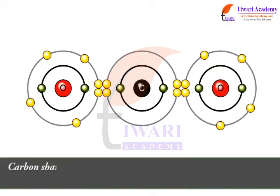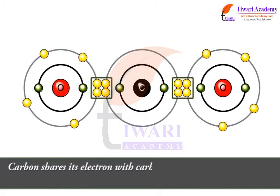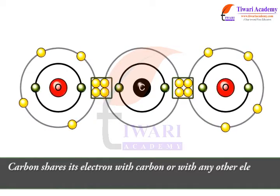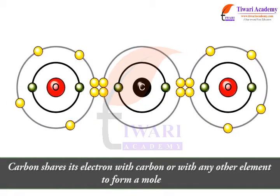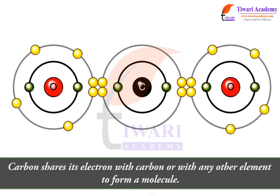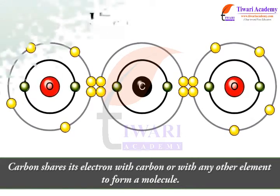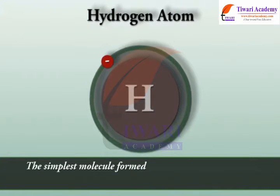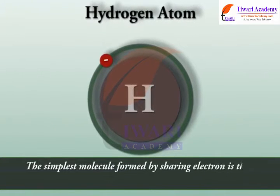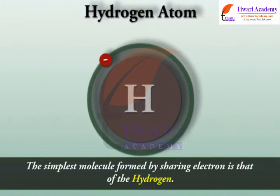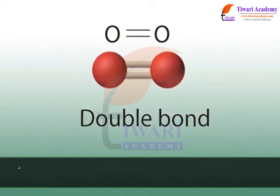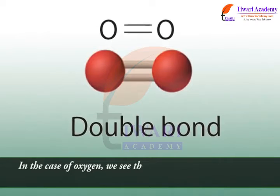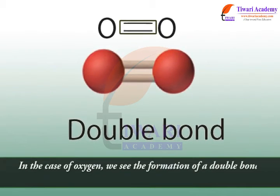Carbon shares its electrons with carbon or with any other element to form a molecule. The simplest molecule formed by sharing electrons is that of hydrogen. In the case of oxygen, we see the formation of a double bond between two oxygen atoms.